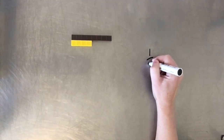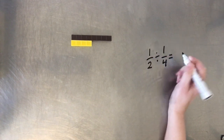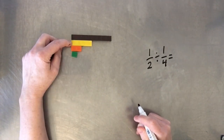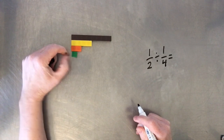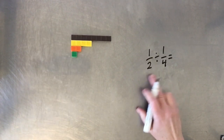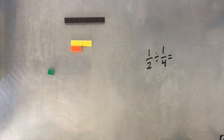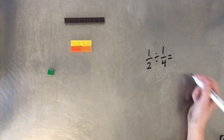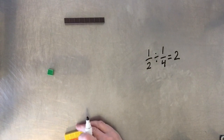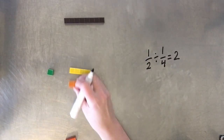Why don't we divide one-half by one-quarter? Keep in mind that this was our whole one, this is our half, this is our quarter, and this is our eighth. All this is asking is: how many fourths, or one-quarter, fit into one-half? How many of these orange ones fit into here? Well, two of them. That's pretty easy — that's not hard to do.